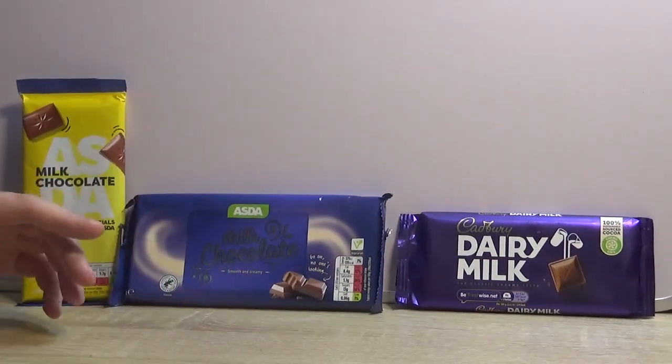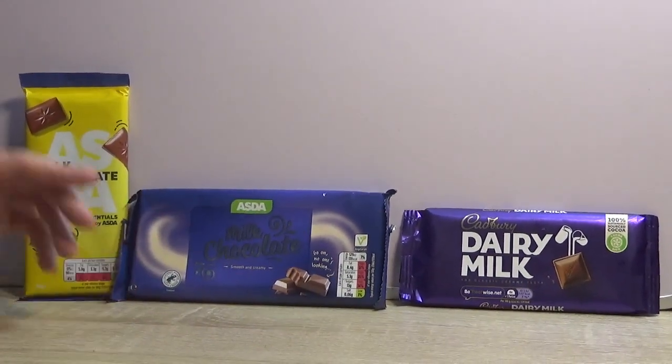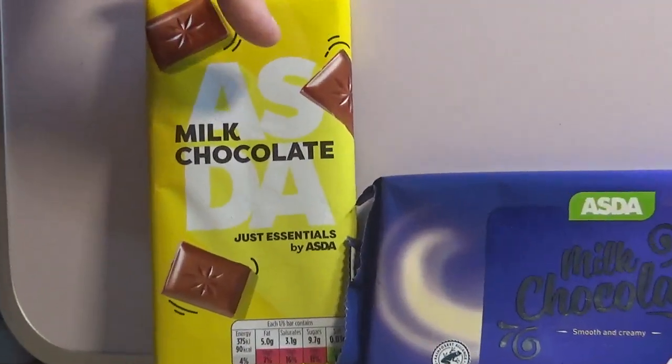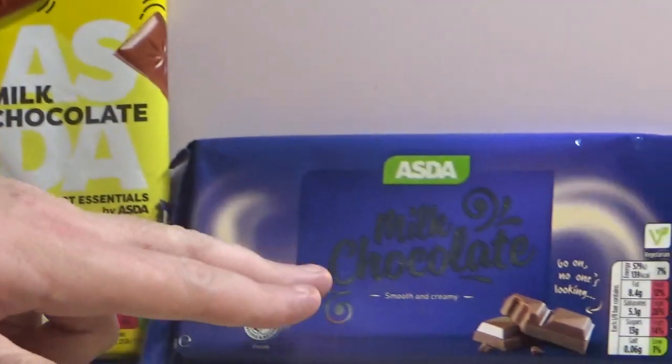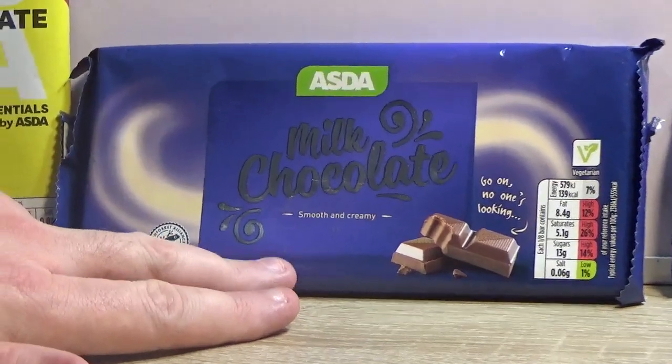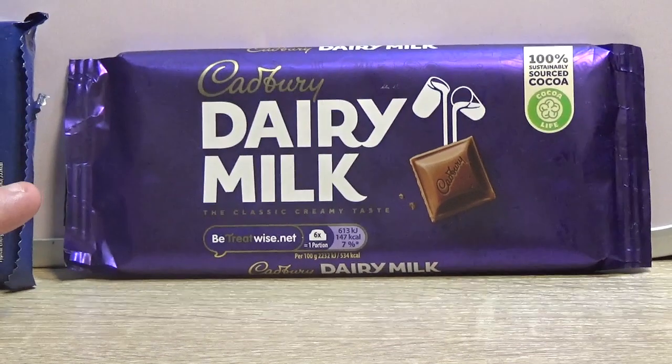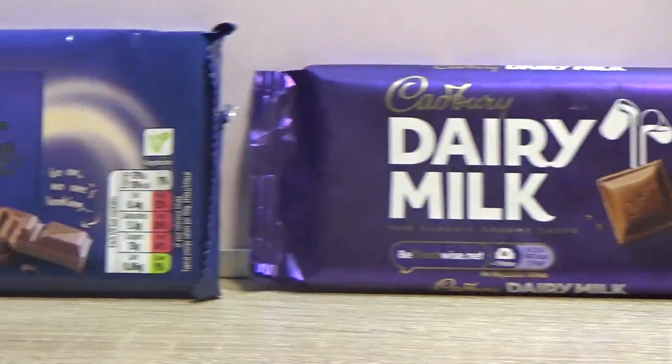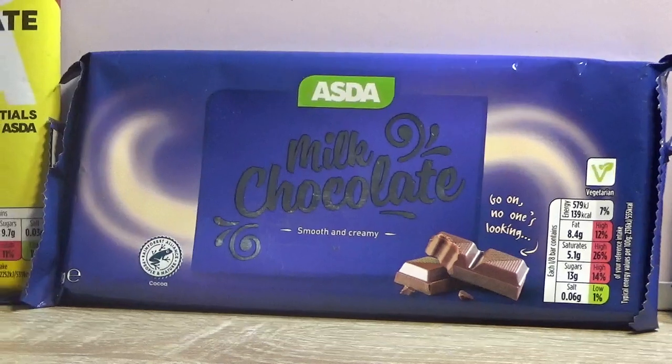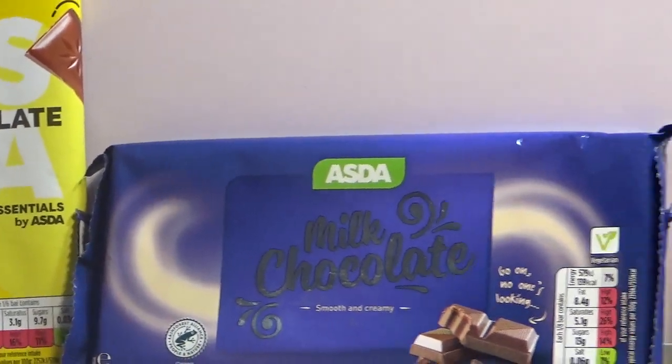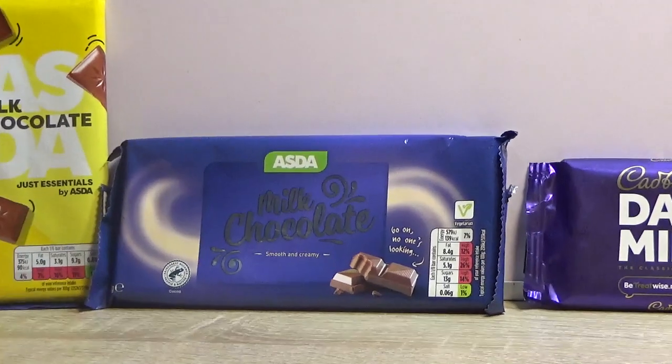Now the differences between those are the Asda just essentials cost me 33 pence, the Asda milk chocolate cost me a pound, and dairy milk cost me one pound 25. So there's a bit of a jump from the 33 pence to a pound, but is it worth buying?